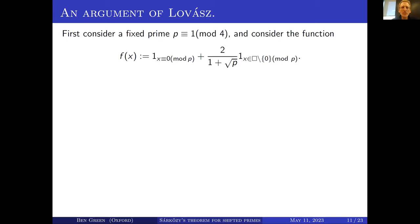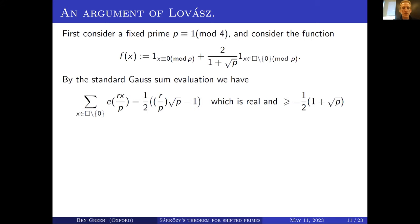Consider a fixed prime p ≡ 1 mod 4. We define the following function mod p: it is 1 at 0 mod p, and at the squares mod p other than zero, it takes the value 2/(1+√p). So that's a function supported on the squares mod p — it's 1 at zero and 2/(1+√p) at the nonzero squares.